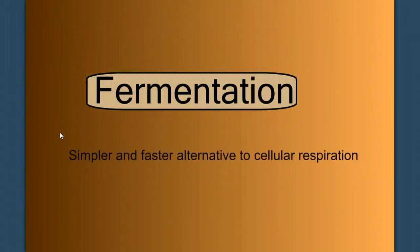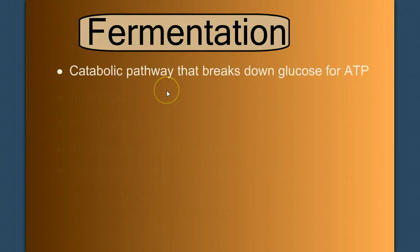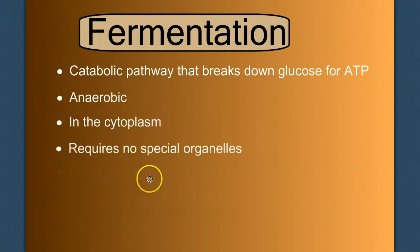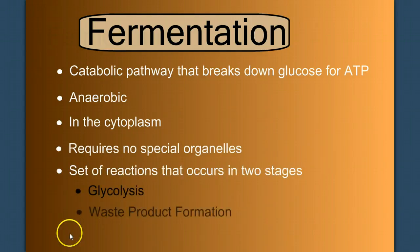Fermentation is a simpler and faster alternative to cellular respiration. It allows us to burn glucose without oxygen and without complex organelles like mitochondria. Fermentation is a catabolic pathway that breaks down glucose for ATP. It's anaerobic. It occurs in the cytoplasm. It requires no special organelles. It's a set of reactions that occurs in two stages: glycolysis, and what we're going to call for now waste product formation.